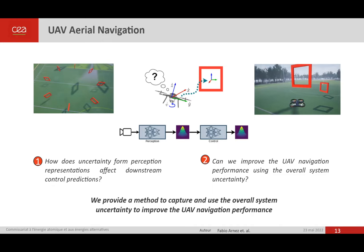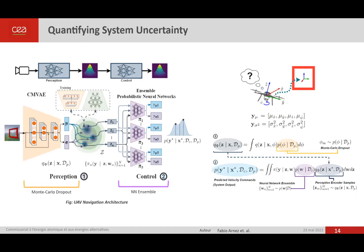We propose a method to quantify system uncertainty and use it to improve navigation performance. Our architecture has two components: perception, based on a cross-modal autoencoder (using only the encoder at inference time), and control, using a simple ensemble of feed-forward networks. To quantify uncertainty, we use Monte Carlo dropout for the perception component, passing a mini-batch of Monte Carlo samples through each ensemble member.